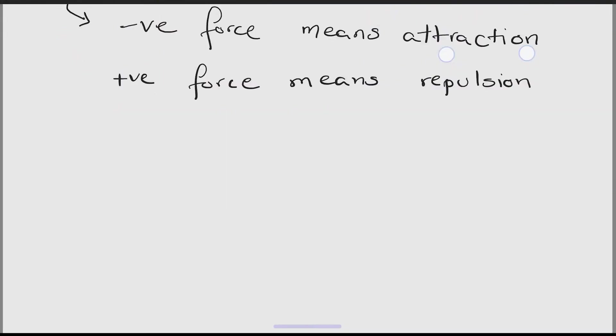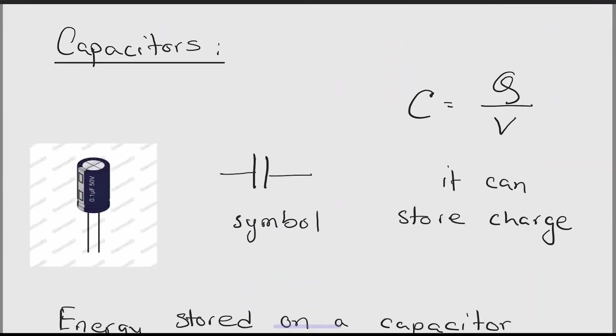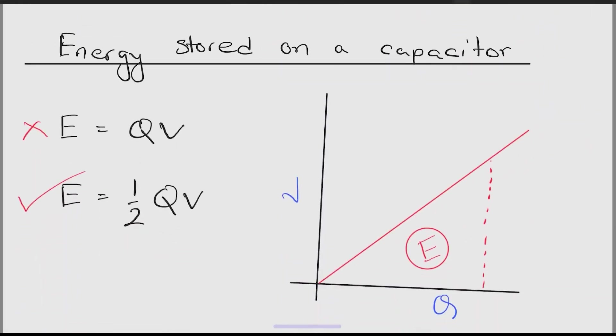The next is a new topic named capacitors. Capacitors are tiny objects that can store charge. This is the formula for capacitors and this is the electrical symbol. The energy stored on the capacitor is given by E equals half QV. So the area under the VQ graph gives energy.